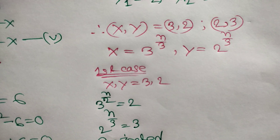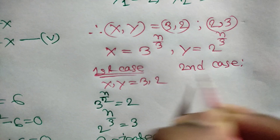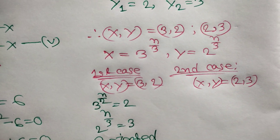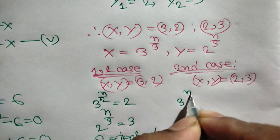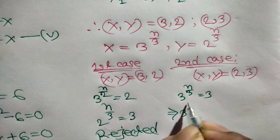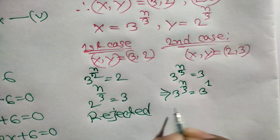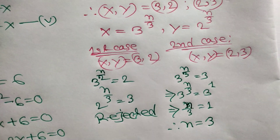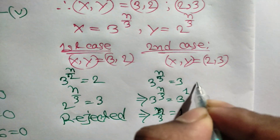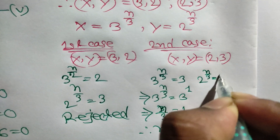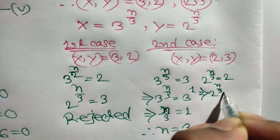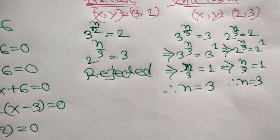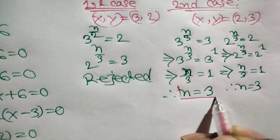For case 2, when (x, y) equals (2, 3): 3 to the power n over 3 equals 3, which means 3 to the power n over 3 equals 3 to the power 1, so n over 3 equals 1, giving n equals 3. Similarly, 2 to the power n over 3 equals 2 to the power 1, so n over 3 equals 1 and n equals 3. Therefore n equals 3 is our final answer.